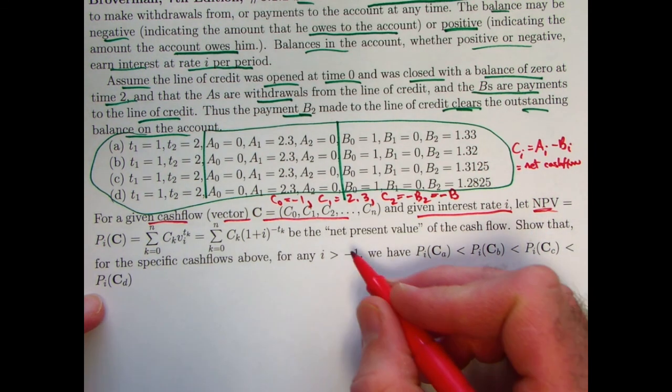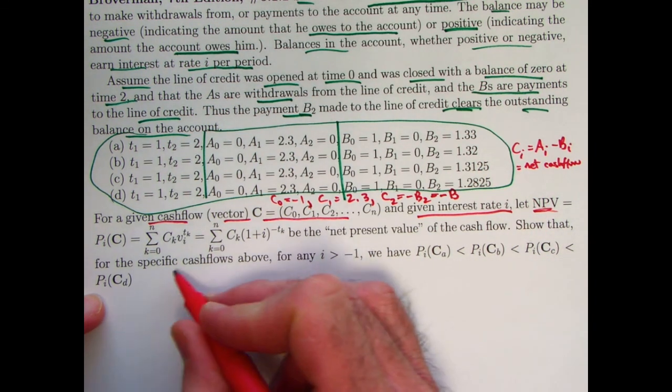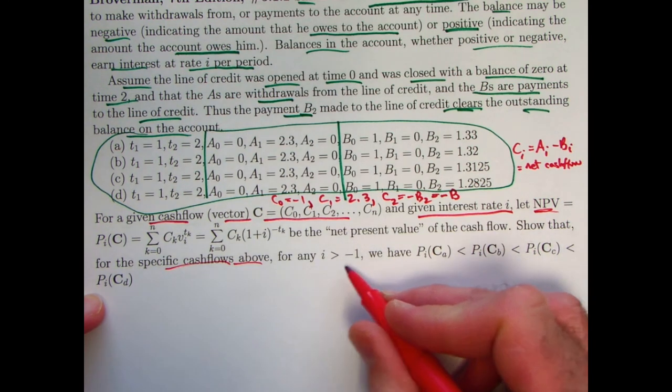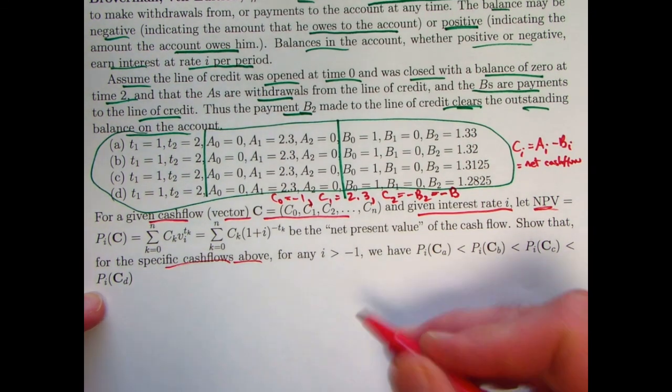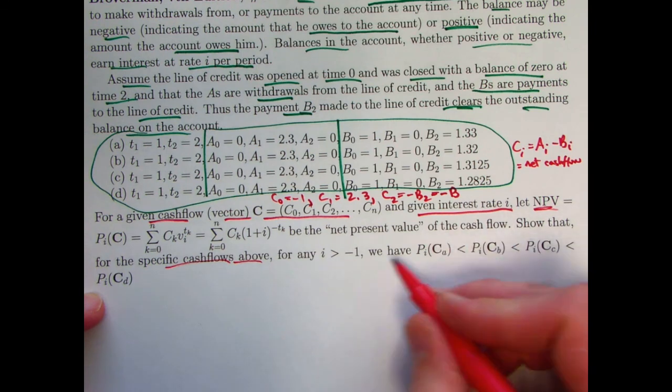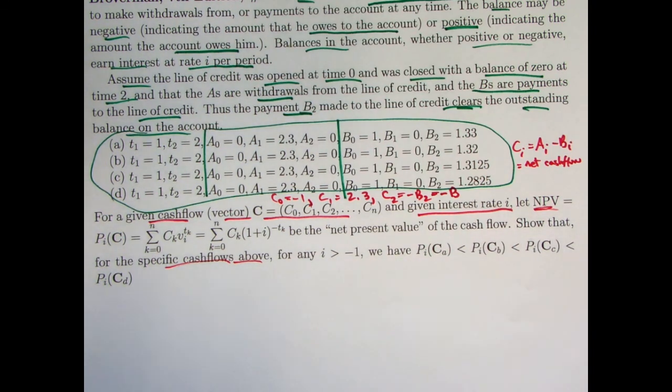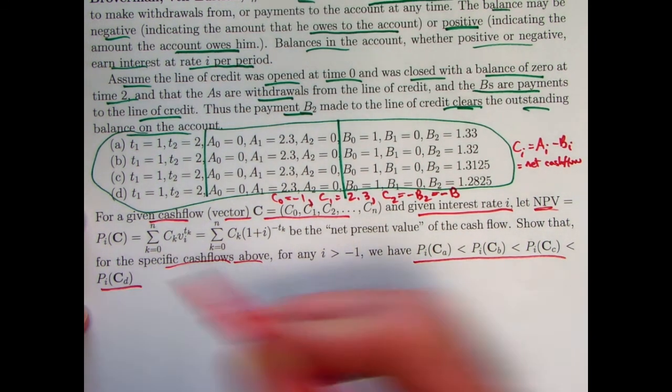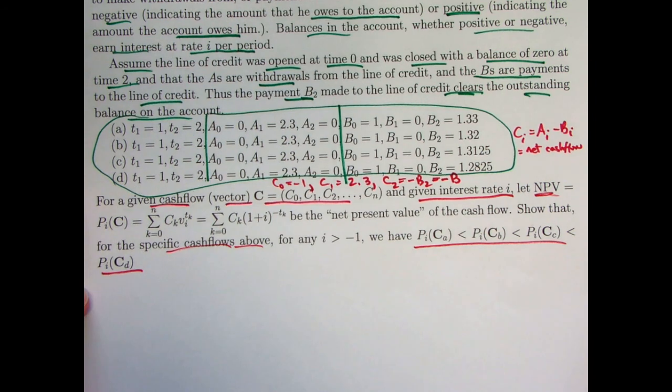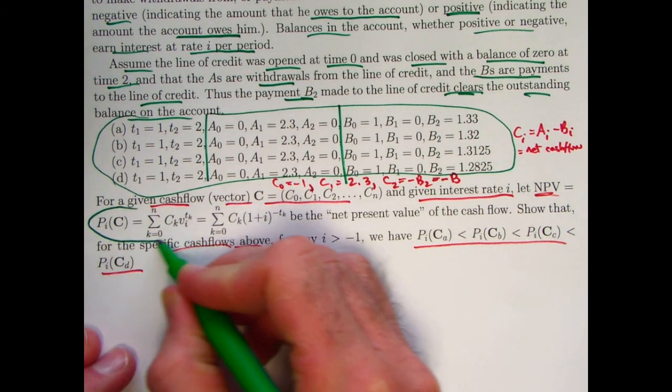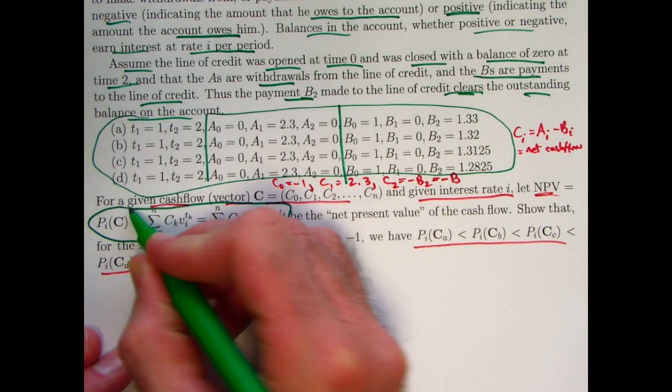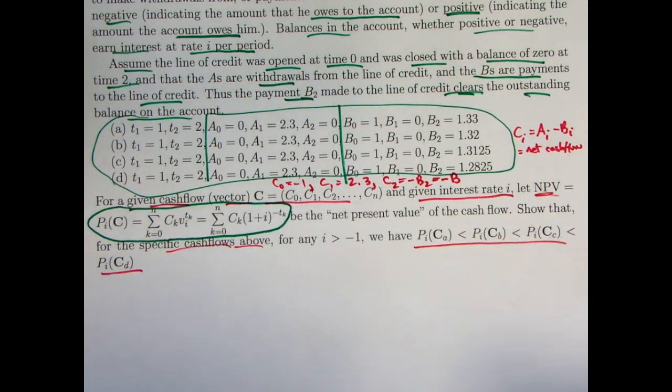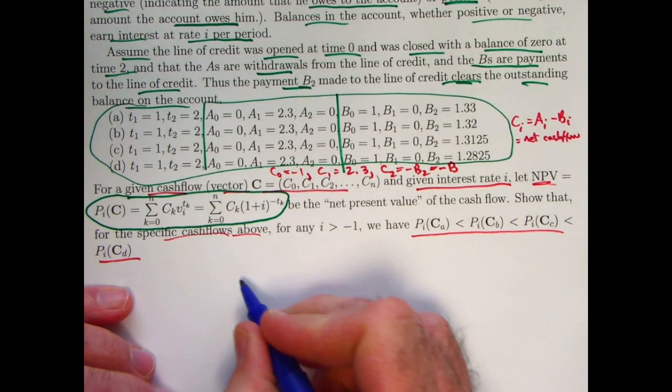Ultimately the goal of this problem is to compare the specific cash flows above when I is bigger than negative one, which is all the realistic possible kinds of situations. Here's the formula for the NPV right here. It's using summation notation. Think about a timeline.